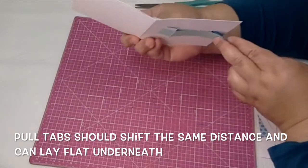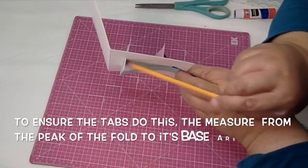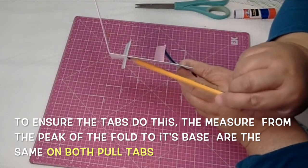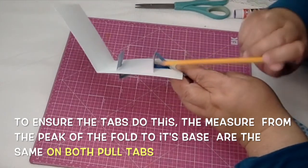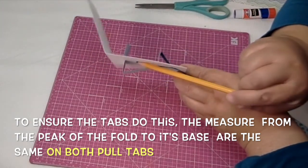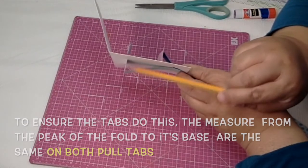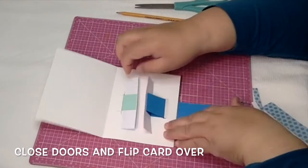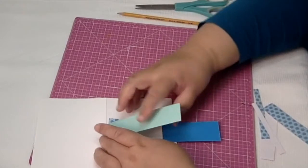So the pull tabs, first of all, should shift in the same distance and lay flat underneath. To make sure that happens, the measure from the peak of the fold to its base should be the same on both of the tabs. See, this measure here should be the same as this measure right here. As long as those two measures are the same, both of the pull tabs will slide in exactly the same distance.